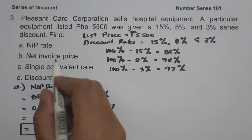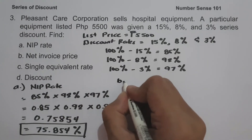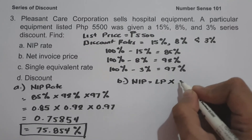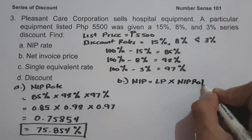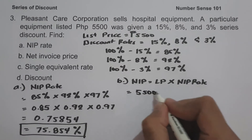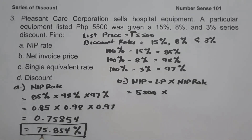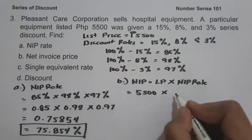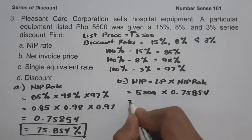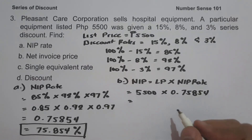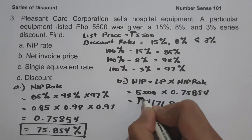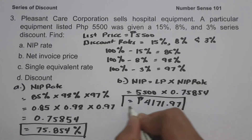To determine the net invoice price: NIP equals list price multiplied by NIP rate, so 5,500 times 75.854% (or 0.75854) equals 4,171.97 pesos. This will be our NIP.